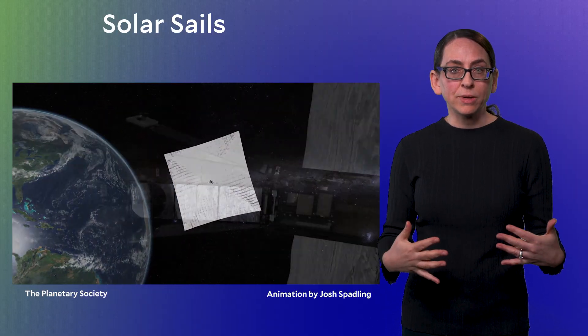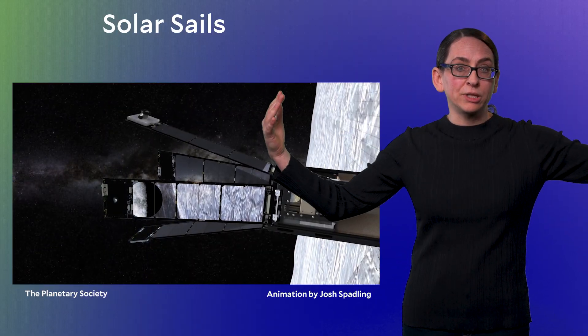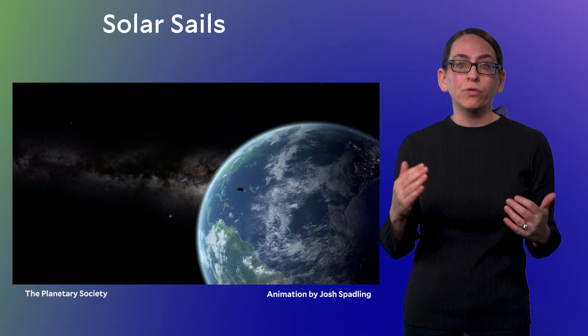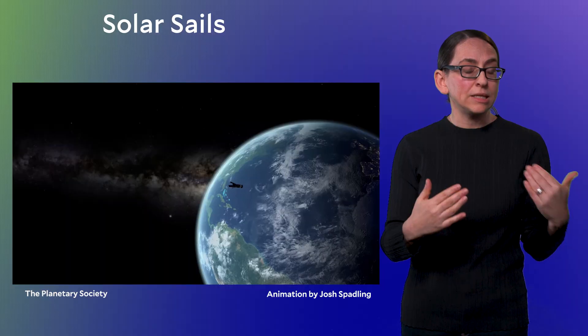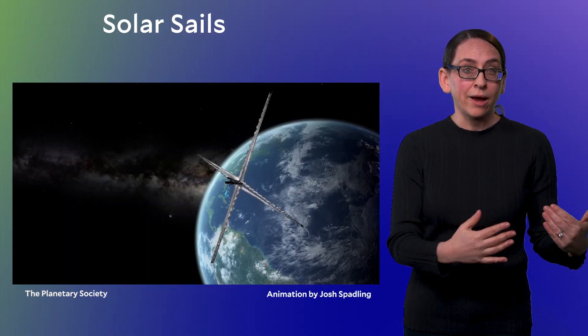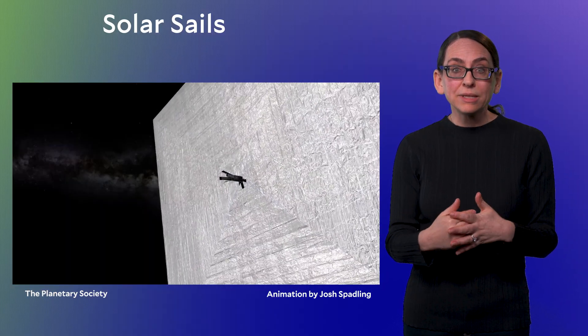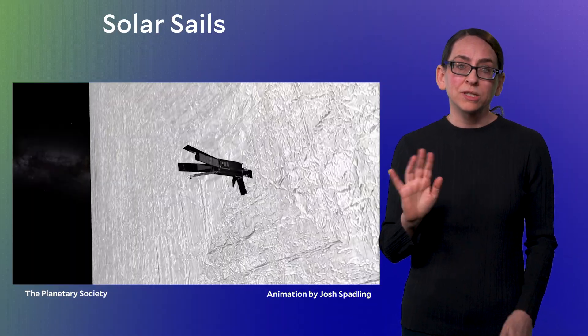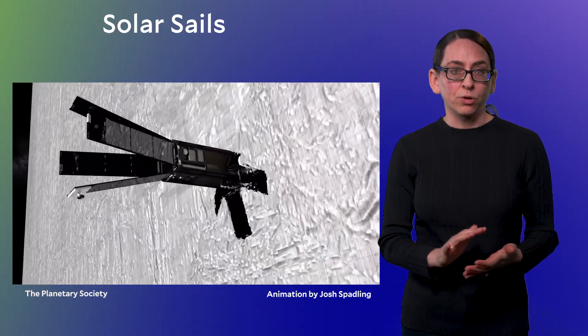Solar sails capture this momentum with sheets of large reflective material. The push is super, super tiny, but over long periods of time, think like decades or centuries, it can add up. Solar sails have been tested in space a few times and shown to work, although this alternative is really not practical for Earth-orbiting satellites.